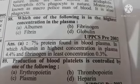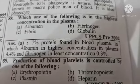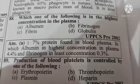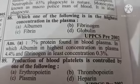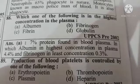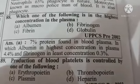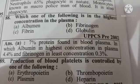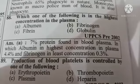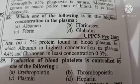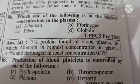Next question: production of blood platelets is controlled by one of the following — Option A: erythropoietin, Option B: thrombopoietin, Option C: plasmin, Option D: heparin. The correct answer is thrombopoietin.